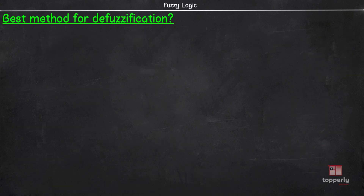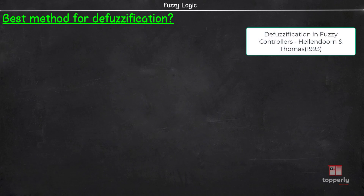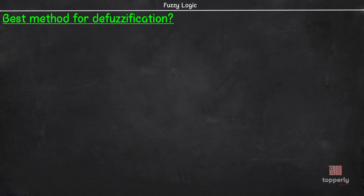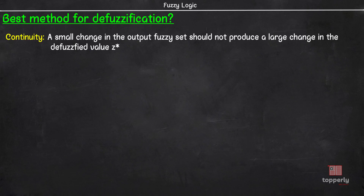Now that we have learned about all 7 methods of defuzzification, which one is the best method? Well, that depends on the context or problem at hand. However, there are 5 criteria developed by Hellendoorn and Thomas in their 1993 paper "Defuzzification in Fuzzy Controllers" — I have given the link to the paper in the description. The first criterion is continuity: a small change in the input of a defuzzification process should not produce a large change in the output.